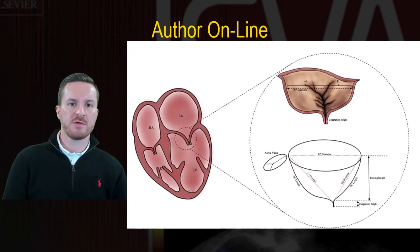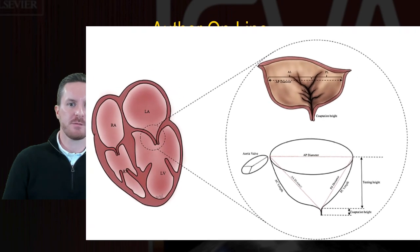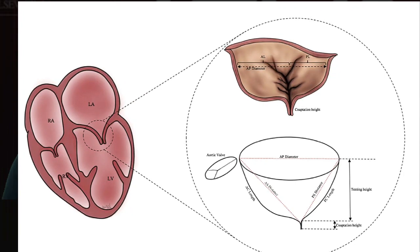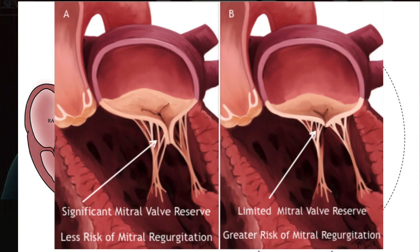The zone of coaptation refers to the degree of apposition between the anterior and posterior mitral valve leaflets. This zone extends from the anterolateral to posteromedial commissure of the valve. The importance of this coaptation zone relates to the structural integrity of the valve to sustain geometric changes in patients with ischemic heart disease. Patients with a large degree of apposition have a large coaptation zone and are able to sustain these geometric changes.